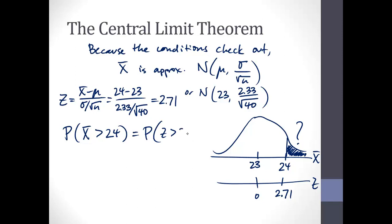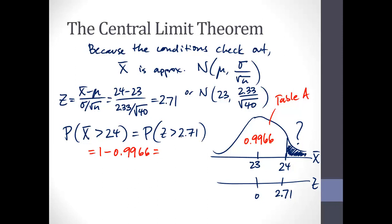Finding the probability that the sample mean of these 40 honey badgers has a tail length greater than 24 is equal to the probability that Z is greater than 2.71. Looking up 2.71 in Table A, the area to the left is 0.9966. So the probability we want is 1 minus 0.9966, which is 0.0034.